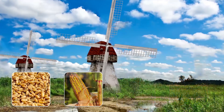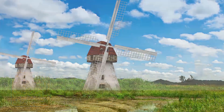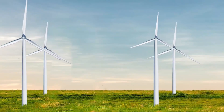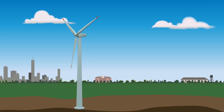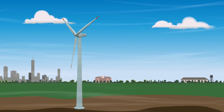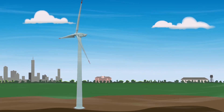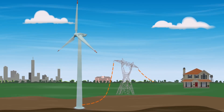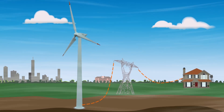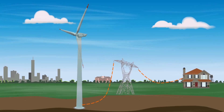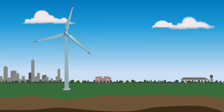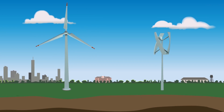Today people also use modern wind turbines to make electricity. A wind turbine is a device that converts the wind's kinetic energy into electrical energy. Wind turbines are manufactured in a wide range of vertical and horizontal axis types.